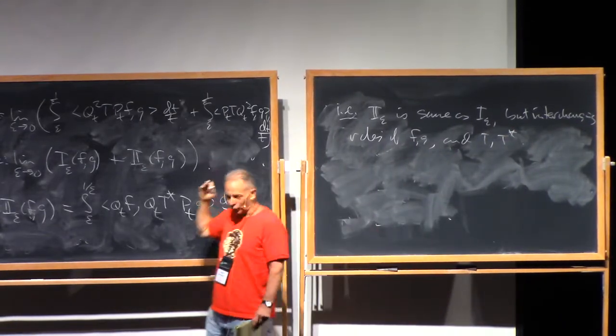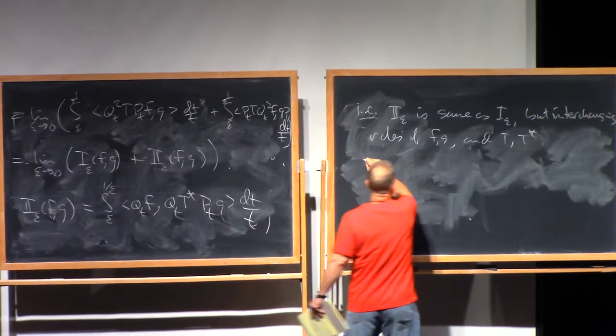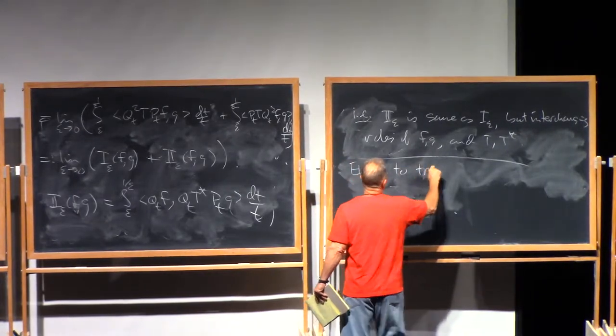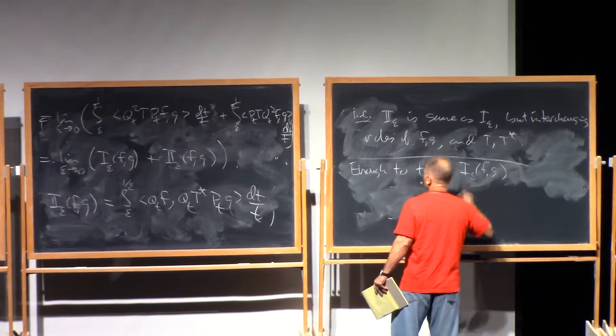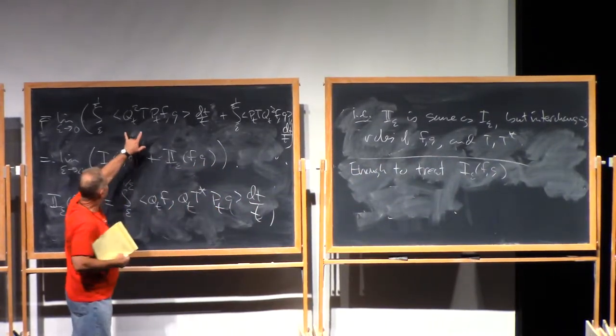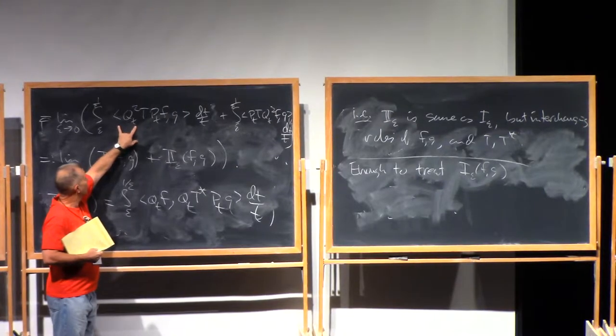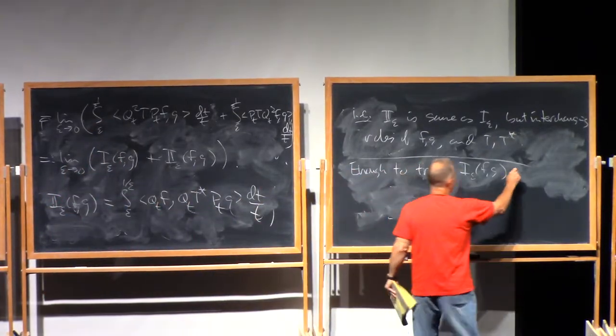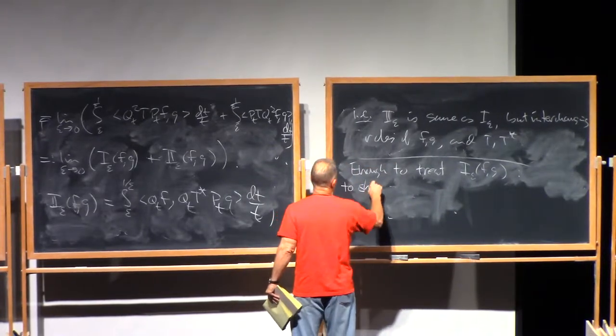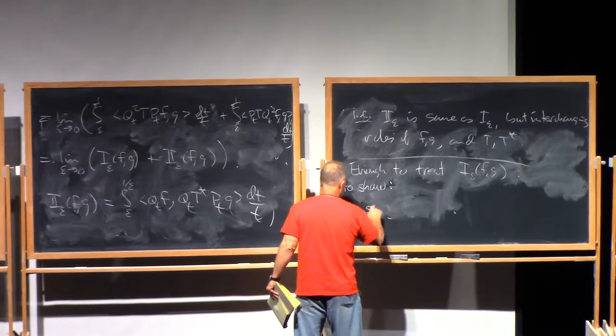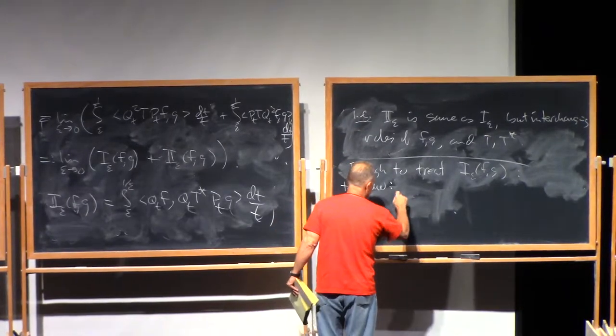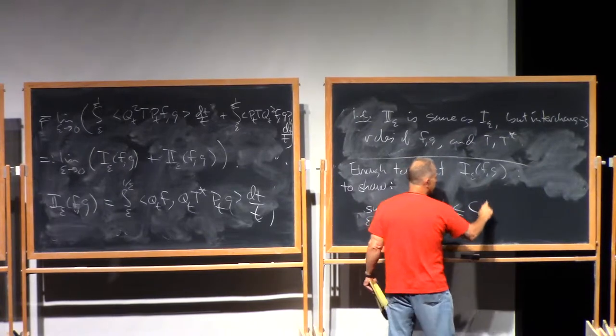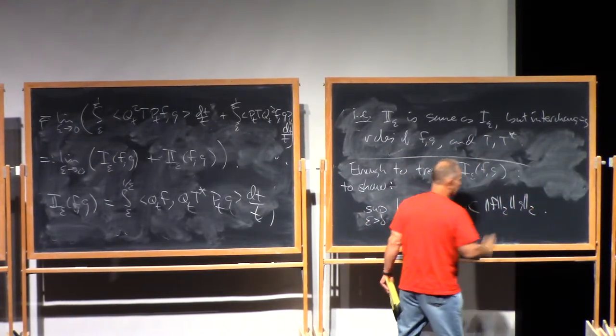Okay, so therefore it's enough to treat the term one. It's enough to treat the term one epsilon, and in fact, it's enough to show the bound that we're after for one epsilon as long as it's independent of epsilon. So our goal now at this point is to show that the sup over epsilon bigger than zero of one epsilon of fg is less than or equal to some permitted constant times the L2 norm of f times the L2 norm of g.